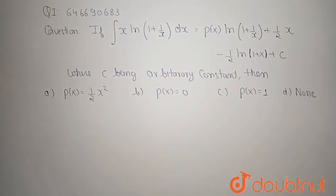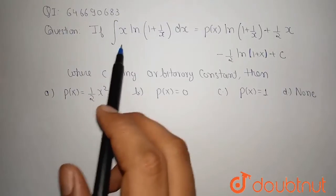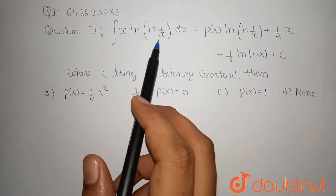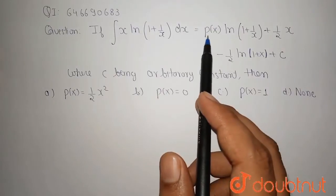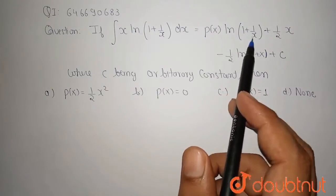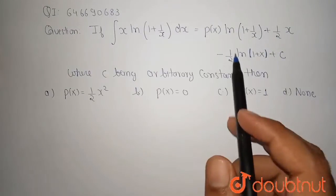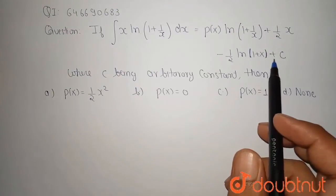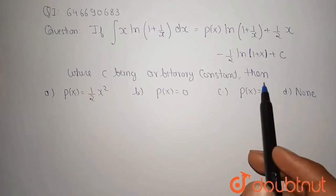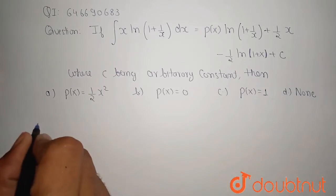Hello friends, welcome to Doubtnut. Our question is: if the integration of x times ln(1 + 1/x) dx equals p(x) times ln(1 + 1/x) plus 1/2 x minus 1/2 ln(1 + x) plus c, where c is any arbitrary constant, then we have four given options.